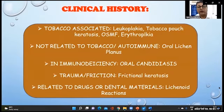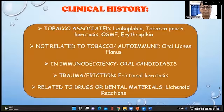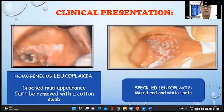Red and white lesions are usually associated with tobacco. When not related to tobacco, examples include lichen planus, oral candidiasis in immunodeficient patients, frictional keratosis from irregular teeth or dentures, and sometimes lichenoid reactions due to drugs or dental materials. Clinical presentations are either homogeneous or speckled.